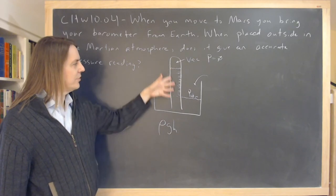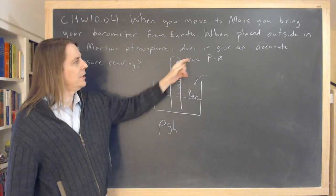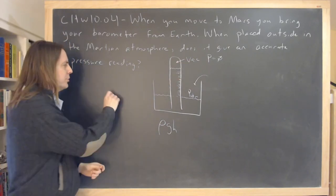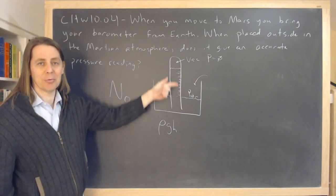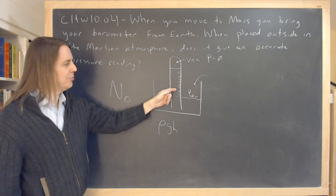Mars, that g is lower, so the scale is different. So no, it does not give an accurate pressure reading on Mars. It would be lower. The column probably wouldn't come up as high because the atmospheric pressure is so low on Mars, but you wouldn't be able to use the scale.